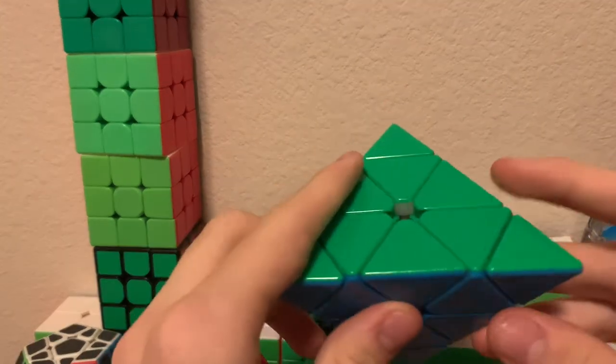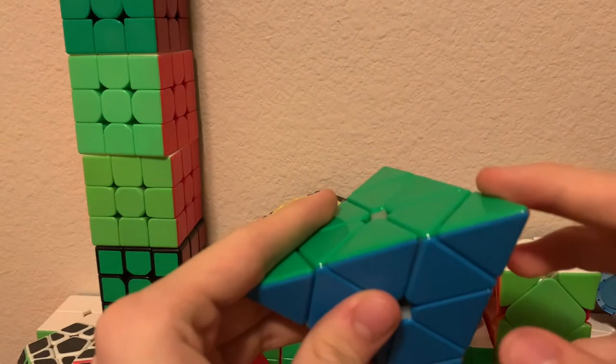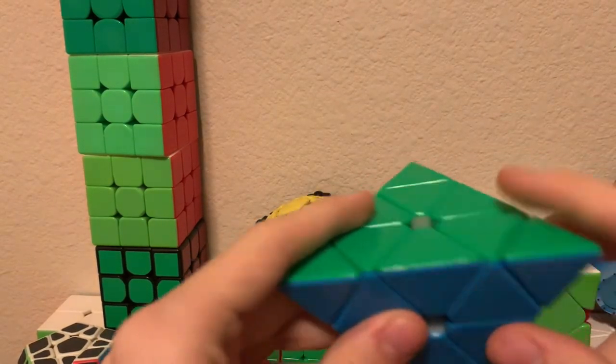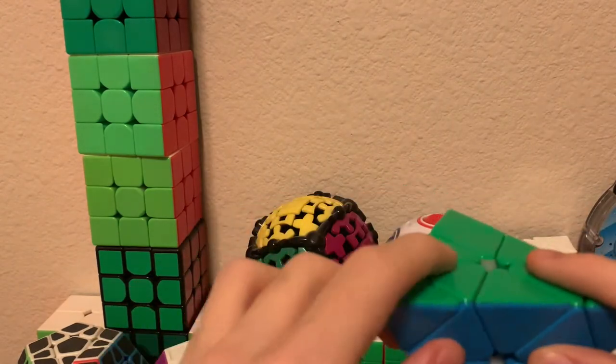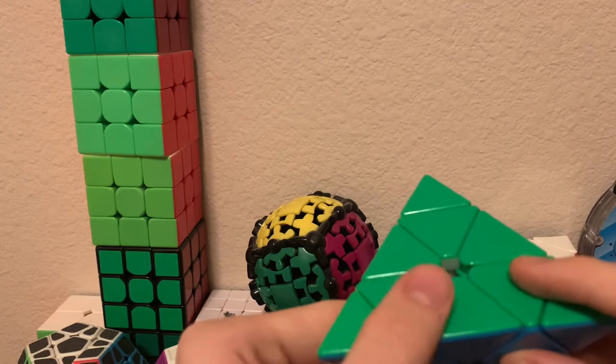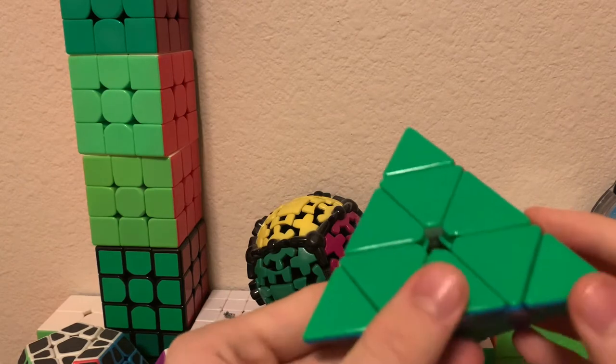Backbone is a very similar method except you combine the creating a bar step and the edge orientation step into one step that you look ahead in inspection. But I'm terrible at Pyraminx look ahead so I'm not going to teach you that at all, but it's fairly easy to figure out.